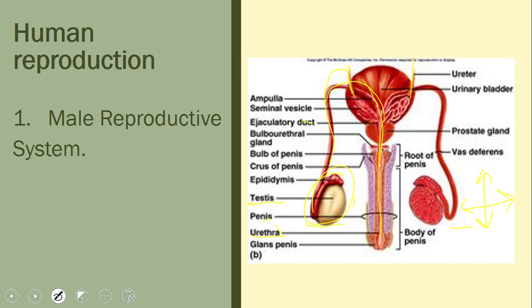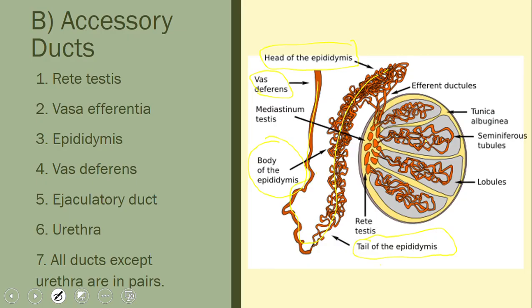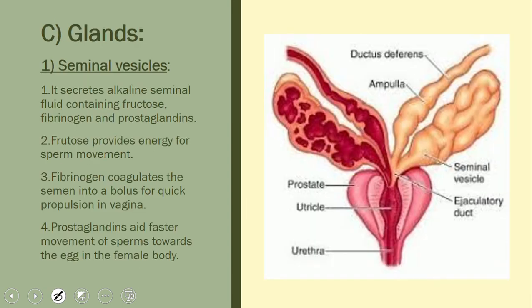Before joining the ejaculatory duct, the vas deferens is joined by different glands. The first is the seminal vesicle, which secretes an alkaline seminal fluid containing fructose, fibrinogen, and prostaglandins.